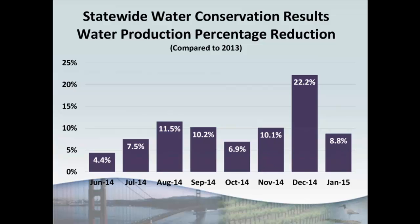A slide shows the water production savings as a percentage comparing 2014 or 2015 water production to the 2013 baseline. The 10.6 billion gallons saved in January equates to an 8.8 percent savings. The data shows a range in variability throughout the year, with winter water savings much more volatile — particularly November through January — because winter months are significantly more driven by precipitation. The drop in savings between December and January indicates that people were great about turning off their sprinklers when it was raining in December, but once the rain stopped in January, they turned sprinklers right back on.